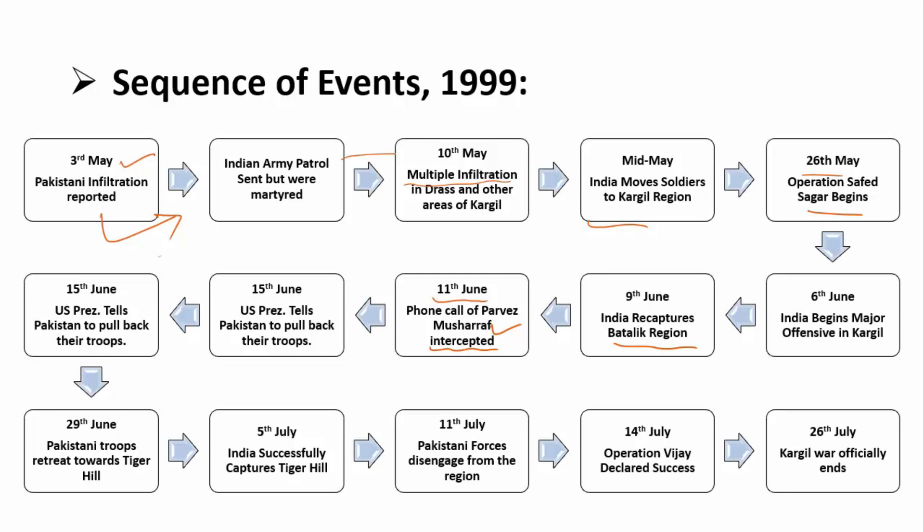Further, US President Bill Clinton applied diplomatic pressure on Pakistan. After 15th June, the Pakistani troops began retreating towards Tiger Hill. In response, on 5th July, India successfully recaptured Tiger Hill, which was a very important milestone in the entire operation.